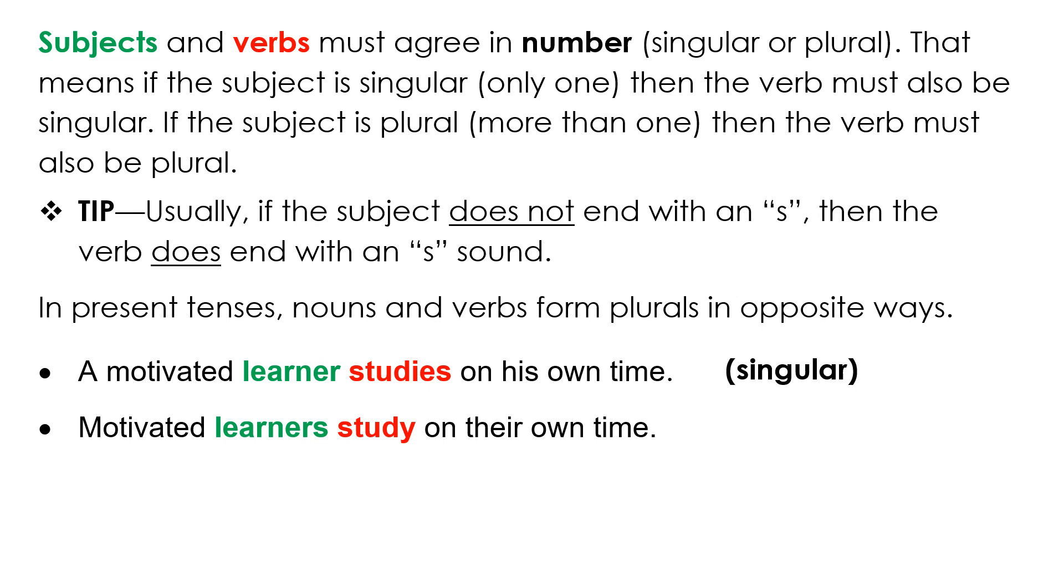Motivated learners study on their own time. This is the plural version. Notice in the first sentence we use 'a' when we're talking about a singular, a motivated learner, but in the second one when we're talking about learners, we don't use an article. We just say motivated learners study, and study does not have an 's' sound. And we also had to change the pronoun from his in the first one to there in the second one.